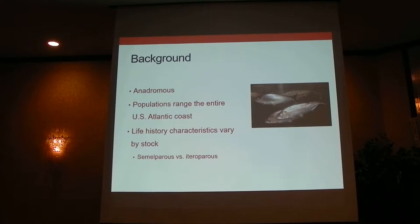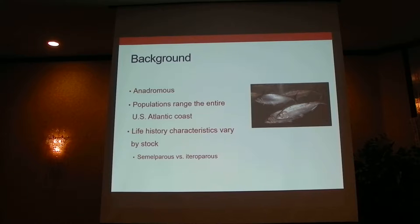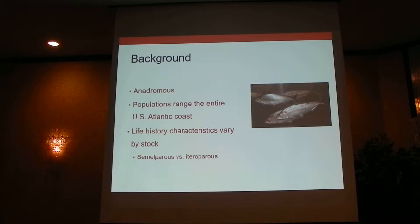The populations range the entire U.S. Atlantic coast, from Maine to Florida, and life history characteristics vary along this range. I especially want to touch on the fact that the southern extent of this range is semelparous, and the northern populations are iteroparous. This is going to become really important later because we're modeling growth for the entire coast, and these parameters obviously differ with this trait.